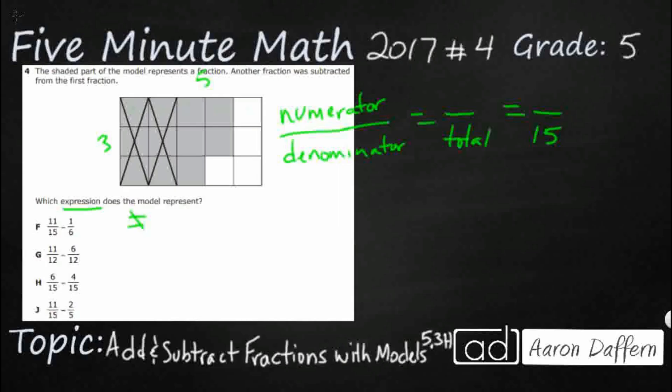Now for the shaded portion the numerator is going to be in this case the shaded, but in other cases it might just be the number of items selected or the number circled. So how many shaded squares do we see?